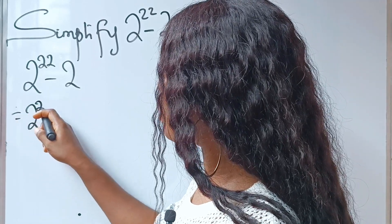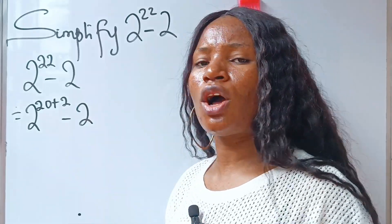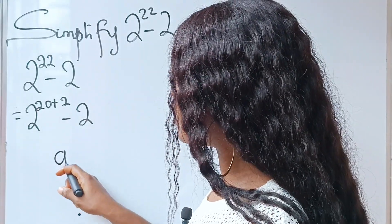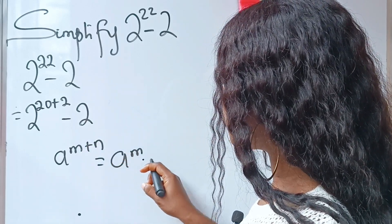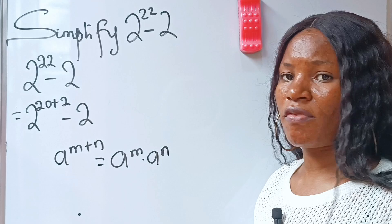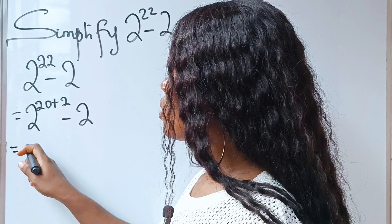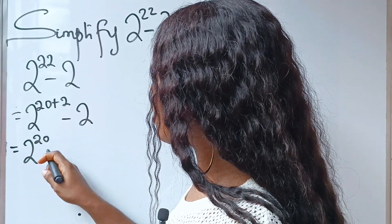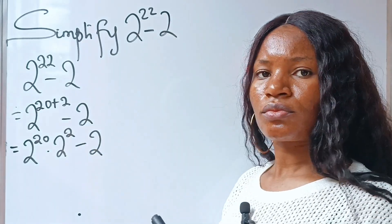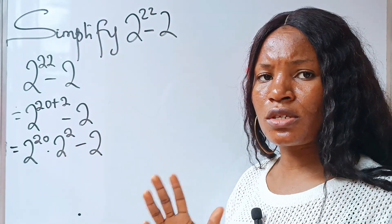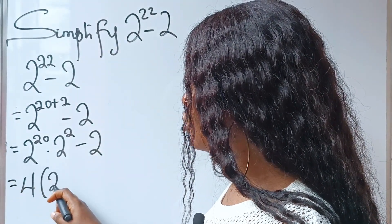This is equal to 2 to the power of 20 plus 2, minus 2. Recall the law of indices, which states that a to the power of m plus n is equal to a to the power of m multiplied by a to the power of n. So we can rewrite this as 2 to the power of 20 multiplied by 2 to the power of 2, minus 2. Now 2 to the power of 2 is 4, so this equals 4 multiplied by 2 to the power of 20, minus 2.